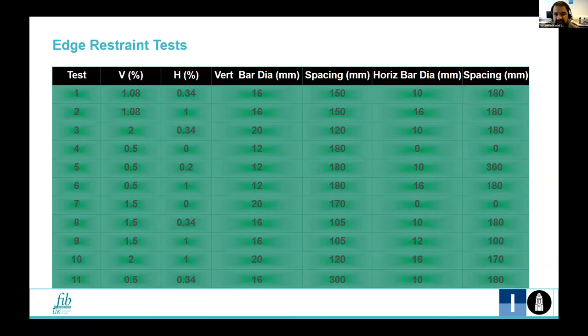In the edge restraint test, we are at the moment focusing on the steel reinforcement as a major parameter, the horizontal and vertical steel reinforcement both. We are studying the influence of variation in the steel reinforcement on the members.